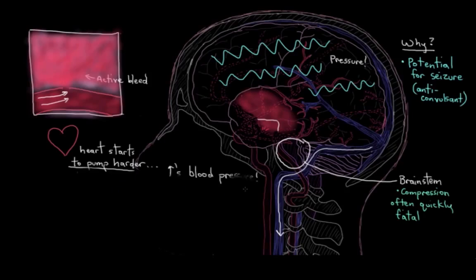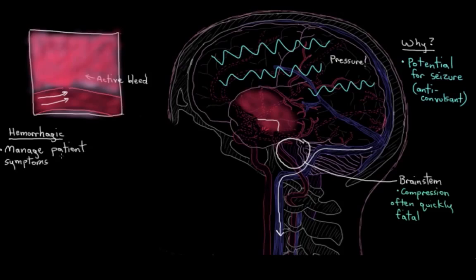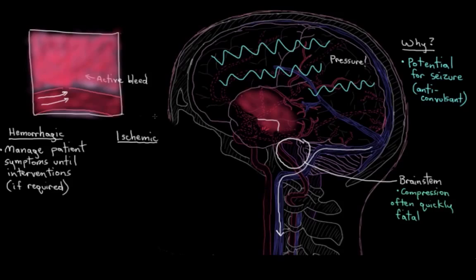But you can definitely start to see that management of hemorrhagic stroke is really about managing the patient until interventions like surgery can happen. Whereas with ischemic strokes, while you might still need more invasive treatment down the line, at least you can give TPA initially to try to get things resolved beforehand, try to bust up that clot before you need sort of more invasive treatment. So that's a quick look at some of the immediate management of ischemic and hemorrhagic strokes.